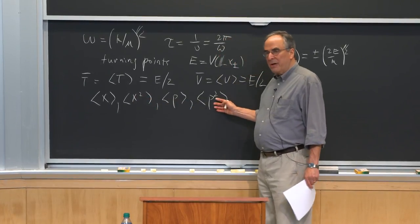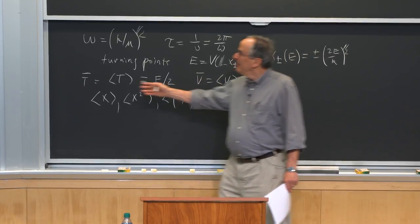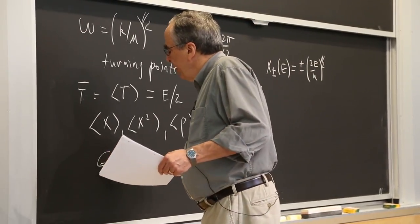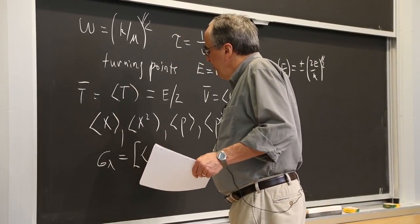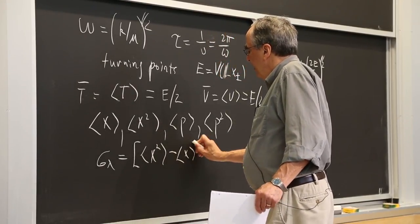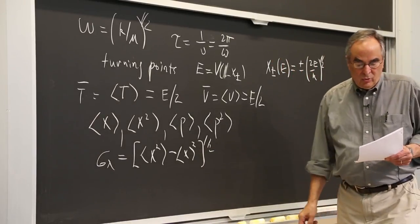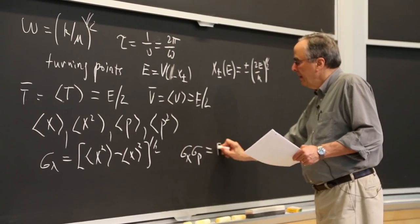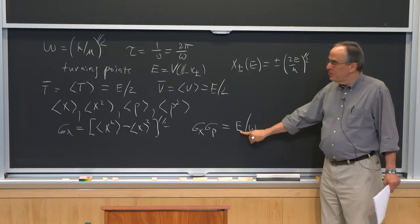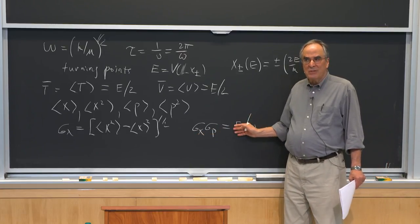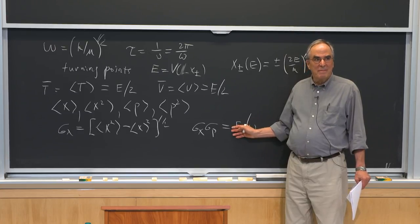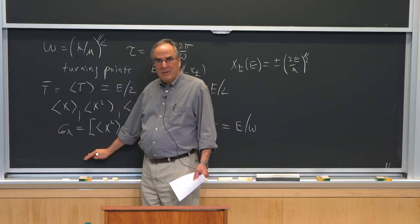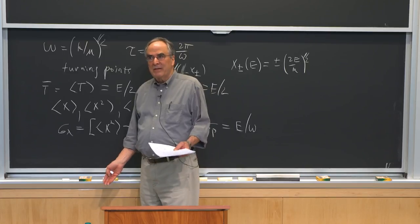You want to be doing it in seconds, not minutes — certainly not by calculating an integral. x² and p² are easy too, especially if you know T and V. We use those to calculate the variance, defined as the average value of the square minus the square of the average, square root. We find that the variance of x times the variance of p equals E over omega — and as you go up in energy, this joint uncertainty increases. This is also true for quantum mechanics.